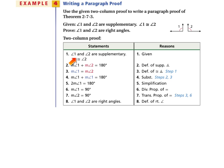Since angle one and angle two are congruent, their measures are equal by definition of congruent angles. By substitution, replace the measure of angle two with angle one, giving: measure of angle one plus measure of angle one equals 180. Simplifying: two times the measure of angle one equals 180. Dividing both sides by two, the measure of angle one equals 90. By transitive property of equality, the measure of angle two also equals 90. Both angles are right angles by definition of a right angle.